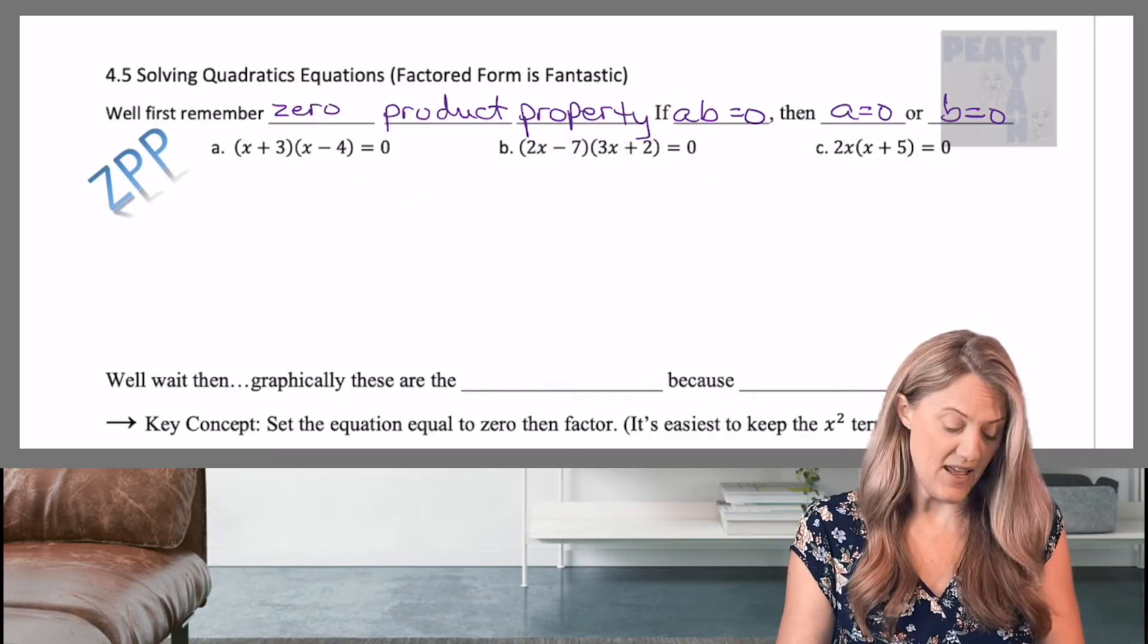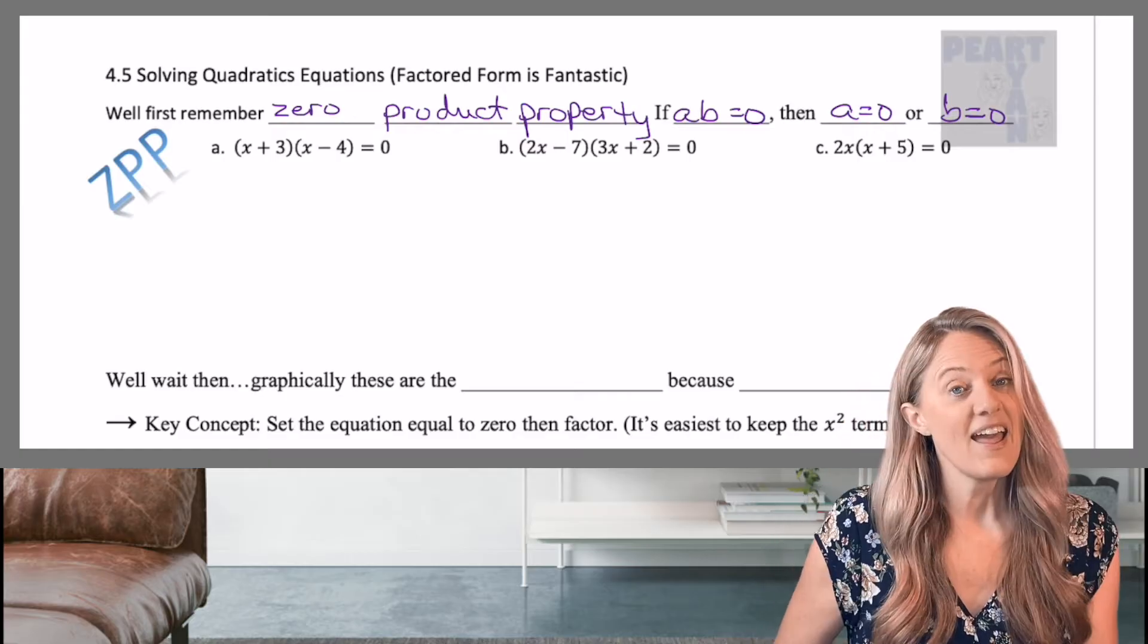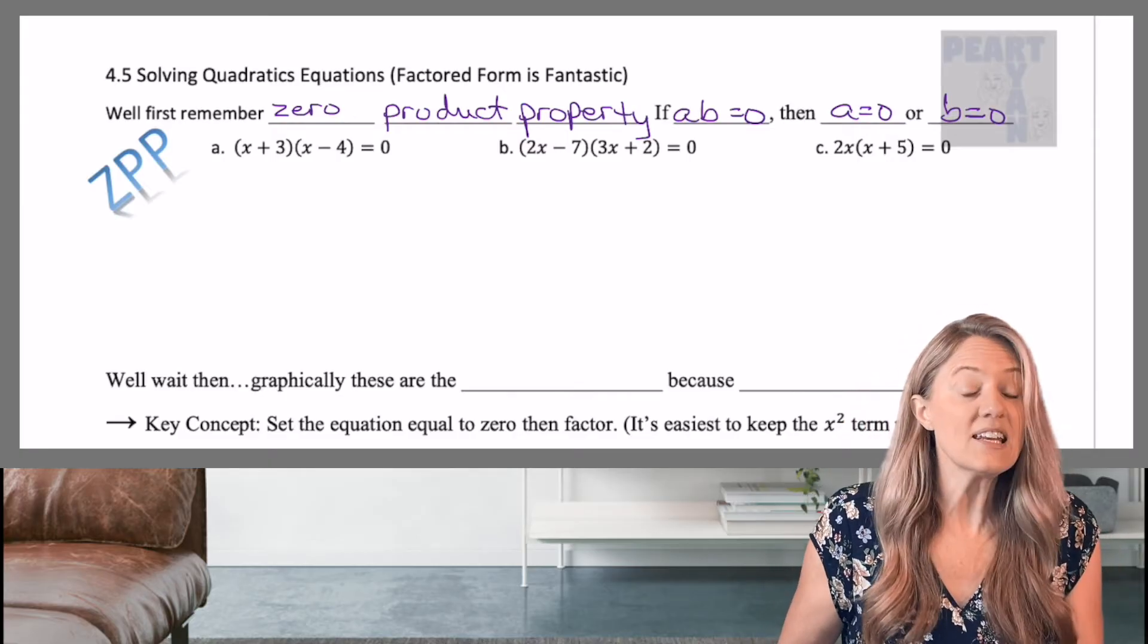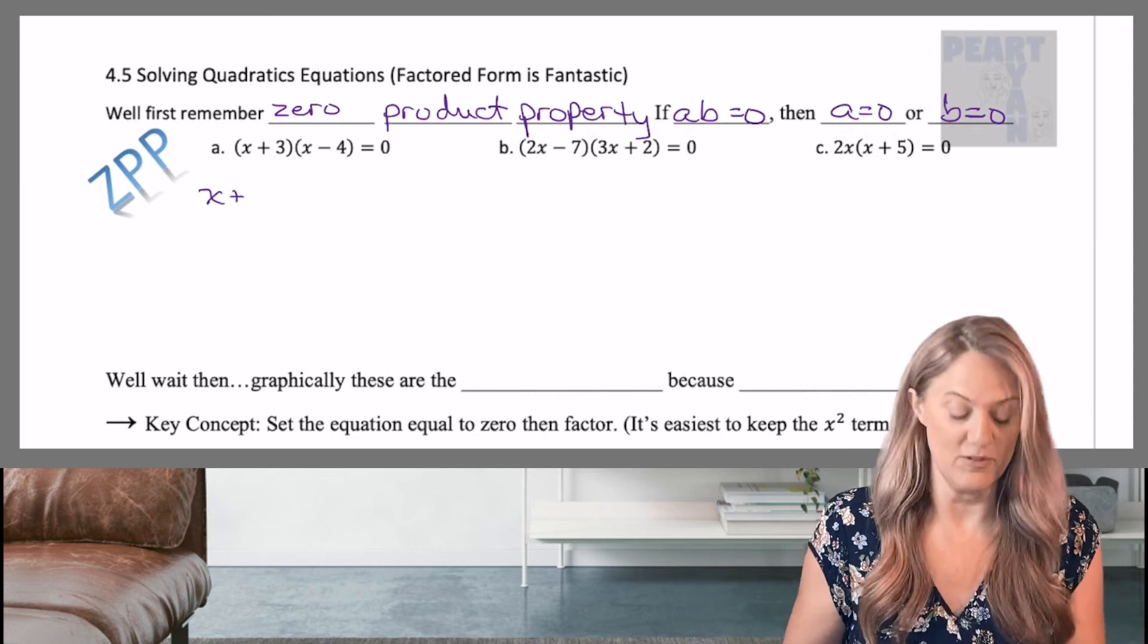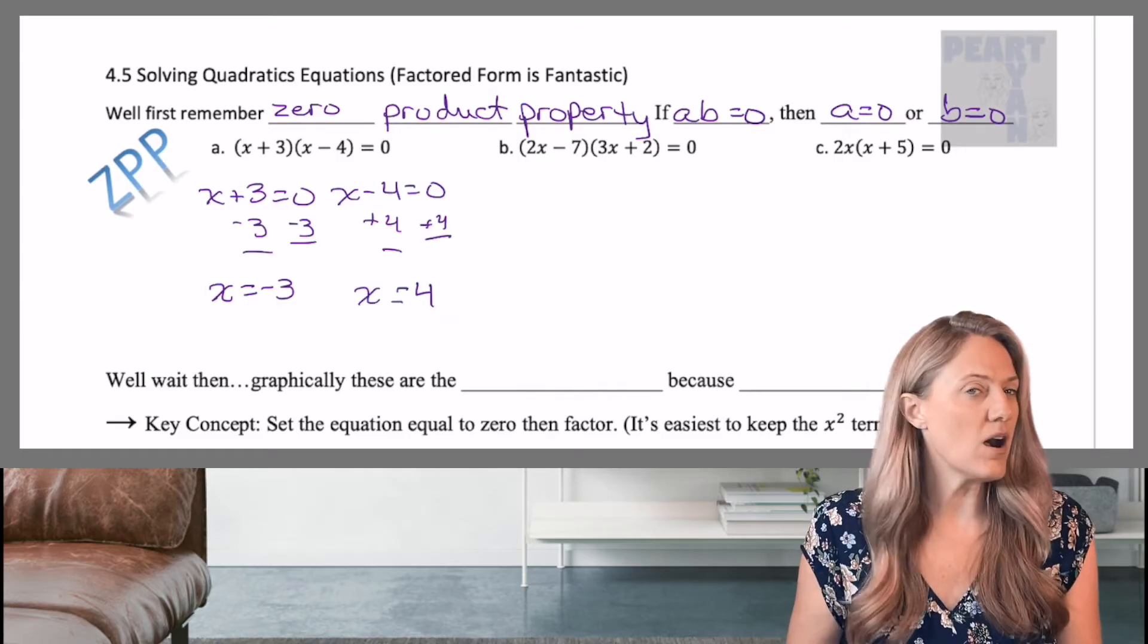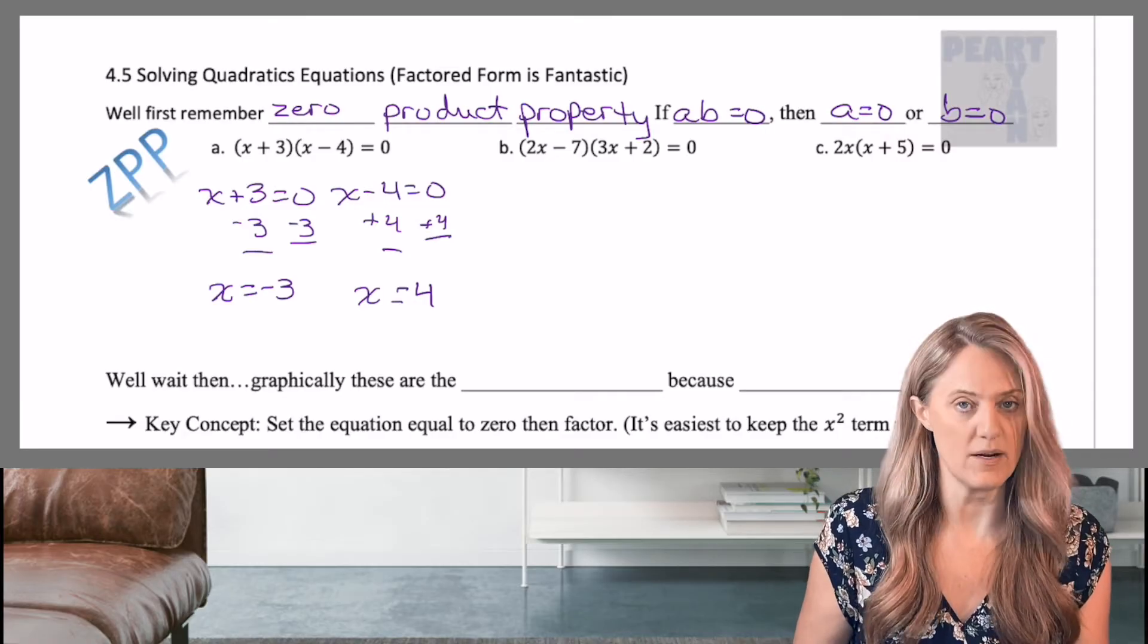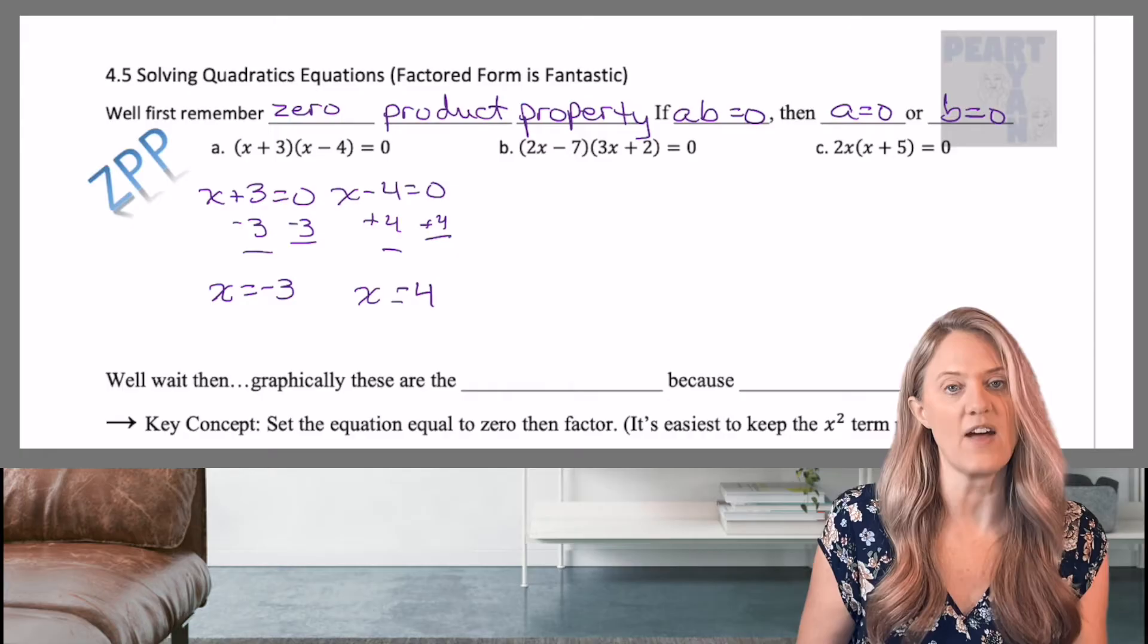So as I look at A, I have X plus three times X minus four equals zero. A is in factored form, and all I need to do is use zero product property to solve. I know that we've already learned that inside opposite, but I wanted to really emphasize that we use zero product property and we solve each factor.